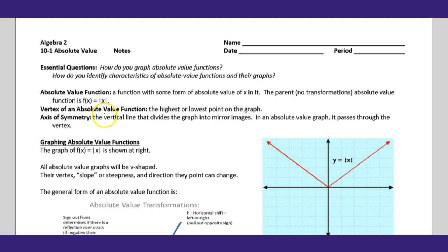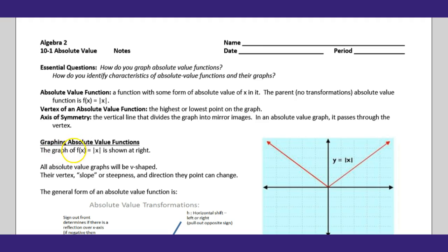There'll be several questions on your quiz and test about the vertex of an absolute value function — the highest and lowest point — and the axis of symmetry. The axis of symmetry is the vertical line that divides the graph into mirror images. Right here the axis of symmetry would be the y-axis, because it divides the left and right side into mirror images. For an absolute value graph, the axis of symmetry passes through the vertex.